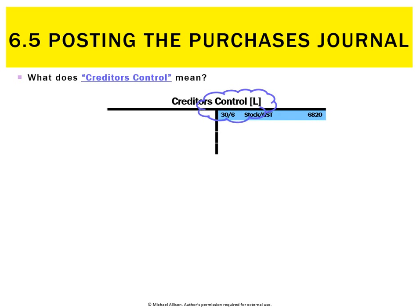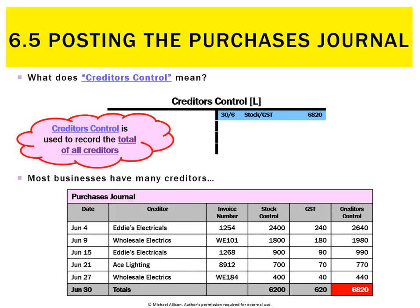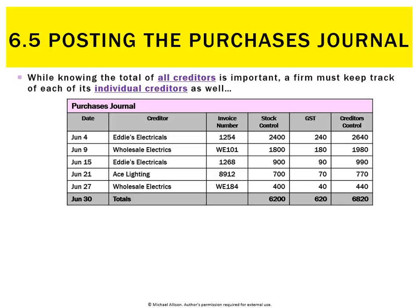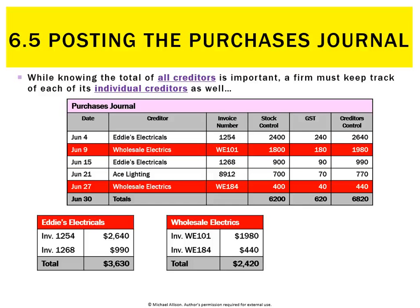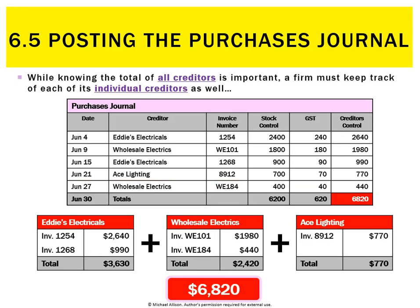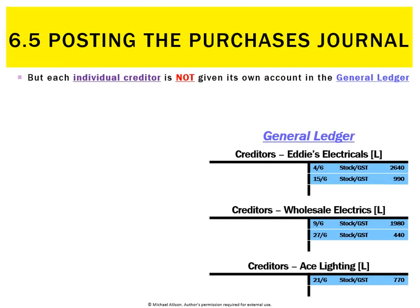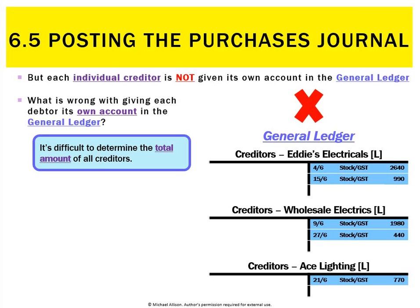What does 'control' mean? Just like with debtors, it means we have one giant overall total ledger for all of our creditors. You can see there are many different creditors in the purchases journal, but the creditors control ledger just has the total of 6820. We've got Eddie's Electricals with 3630 based on two purchases, wholesale electrics with two purchases totalling 2420, and Ace Lighting with a purchase of 770 — all adding to 6820. We're not going to create a separate ledger in the general ledger for each individual creditor.